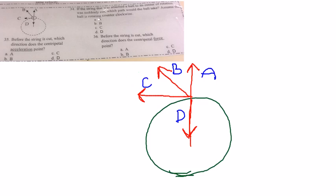Number 35. Before the string is cut, which direction does the centripetal acceleration point? Would it be A, B, C, or D?